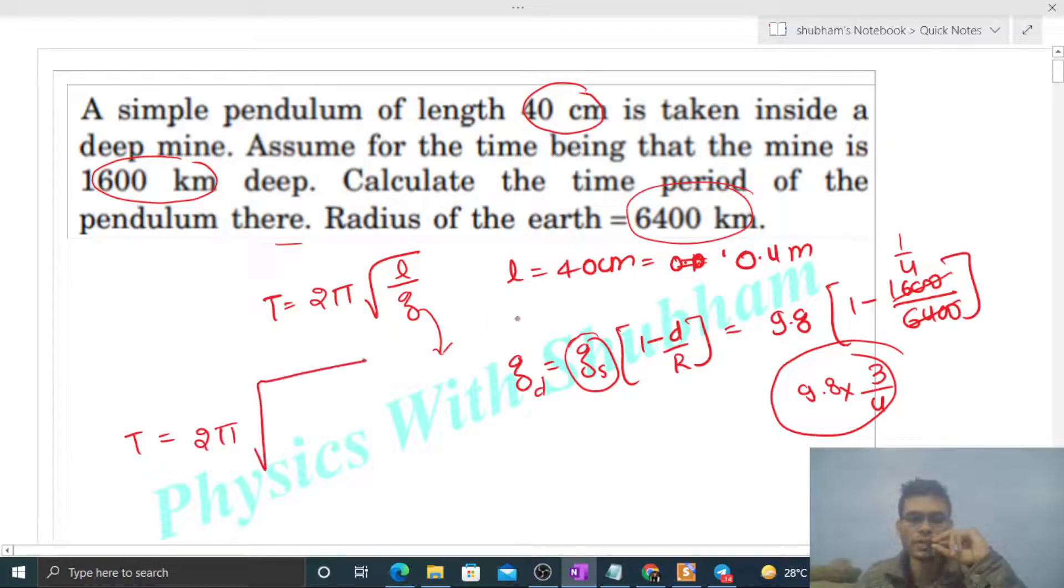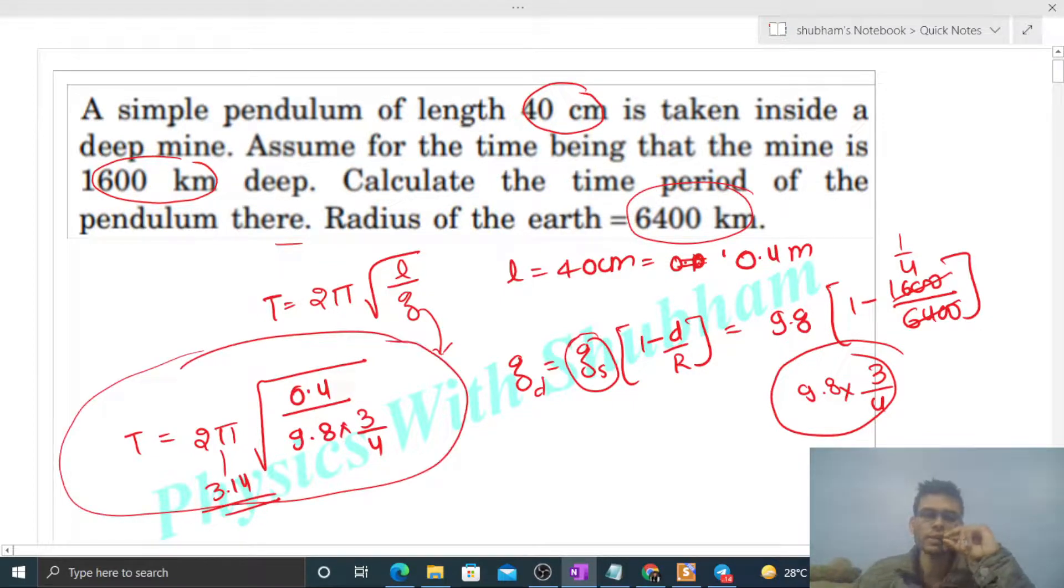That is 2π times the square root of length, which is 0.4 divided by g, that is 9.8 times 3 by 4. Pi ka value 3.14 aap use kar sakte ho. Now just calculation bacha. You can calculate the numerical value of time period.